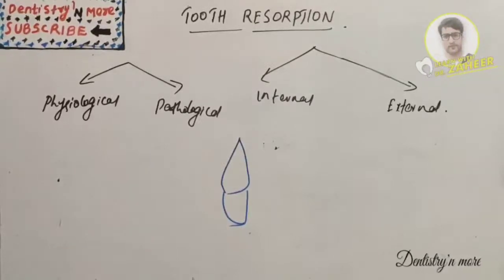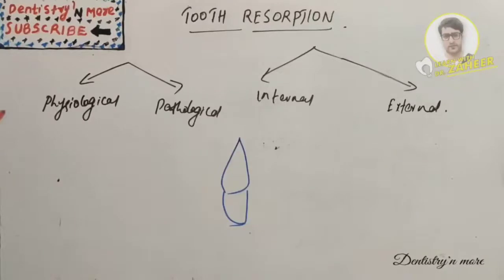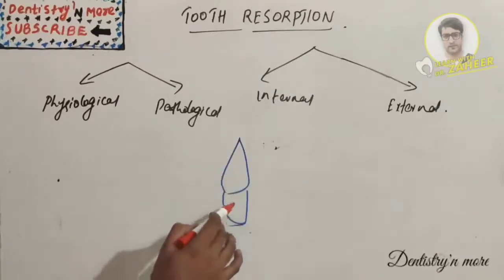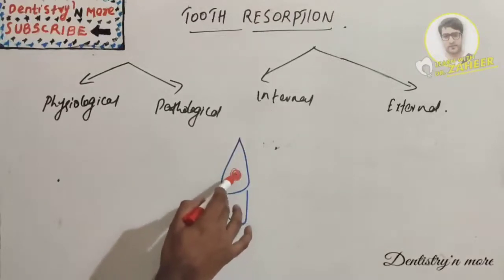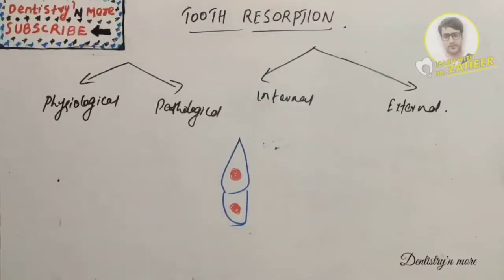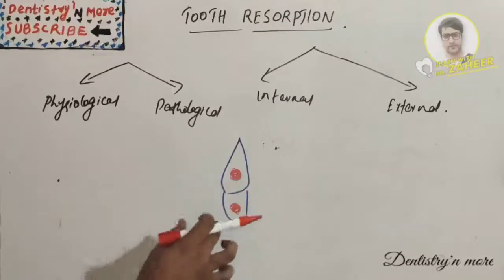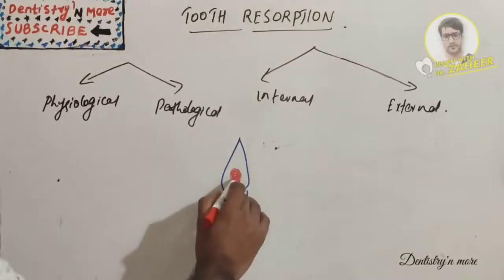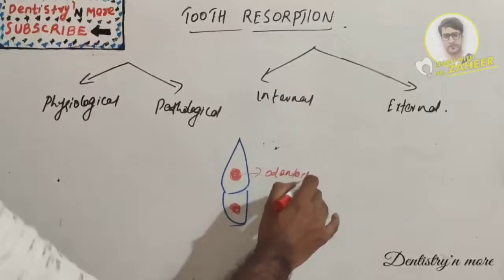Welcome back to another session in dentistry and more. Today's topic in conservative dentistry is tooth resorption. It is a process by which all or part of a tooth structure is lost due to activation of the body's innate capacity to remove the mineralized tissue, mediated by cells such as osteoclasts or odontoclasts. A part of the tooth — root or crown — can be lost.